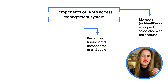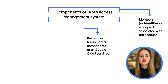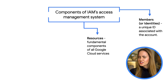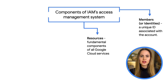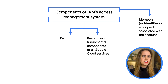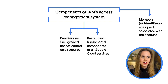Resources are the fundamental components that make up all Google Cloud services, like VMs, storage buckets, and more. The organizations, folders, and projects used to organize them are also considered resources. Permissions are very fine-grained access controls on a particular resource.